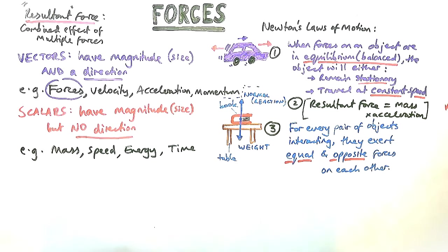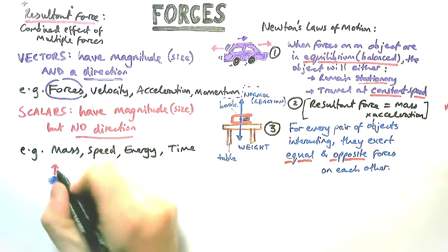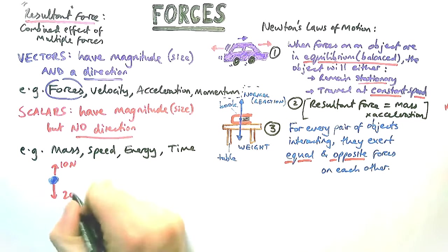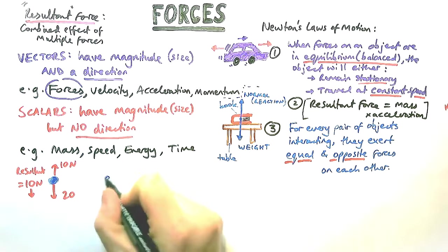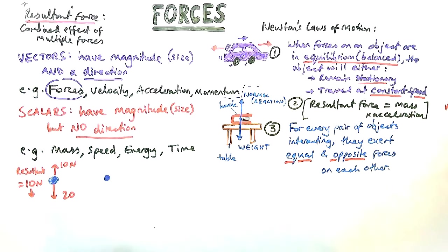Let's have a look at some forces acting on different objects and try to put some numbers to them, because sometimes this topic is easier when we have numbers. So let's say I've got a ball here and I've got two forces acting on it. I've got 10 newtons up, I've got 20 newtons down. So the resultant force, because they're traveling in opposite directions, you subtract them. It would be 10 newtons in the downwards direction.